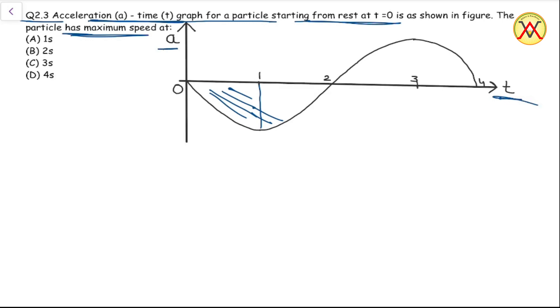So the magnitude of area or velocity will start decreasing after two seconds and it will be zero at time t equal to four seconds.